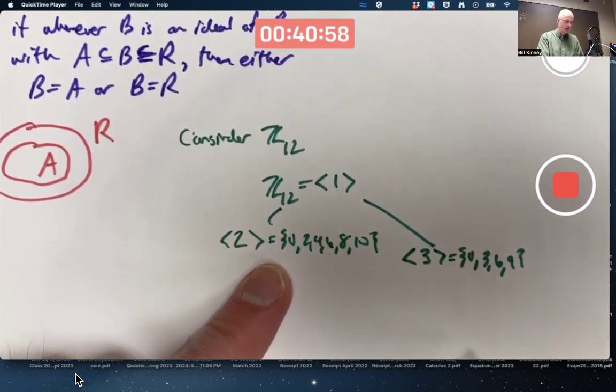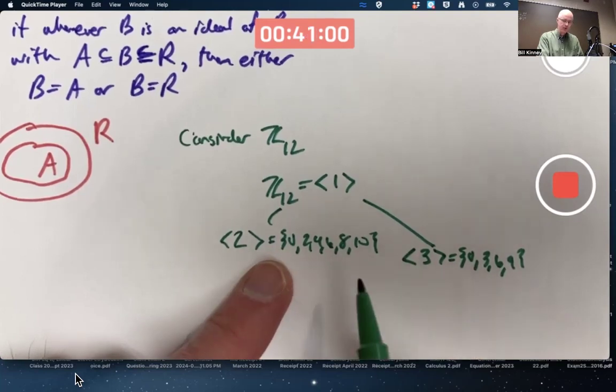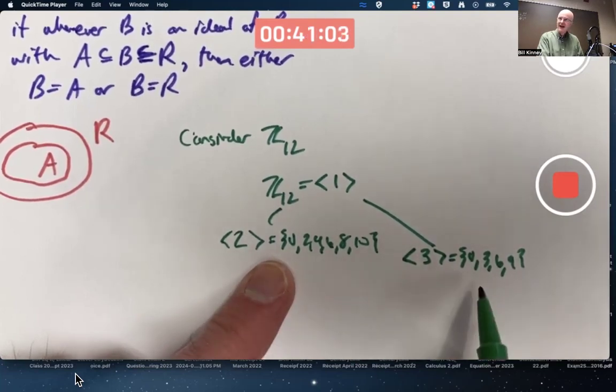It would be the one generated by 4: 0, 4, and 8, which is a subring of this.